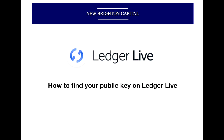Ledger is going to generate a different receiving address every time you want to receive some coins. If you're doing the accounting for that, there can be a whole string of different addresses and you've got to find how they match up, which can be time-consuming. It's a lot easier just to find the public key, and that will give you a list of all the transactions that have happened across all of those addresses generated from your Ledger.